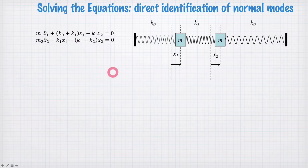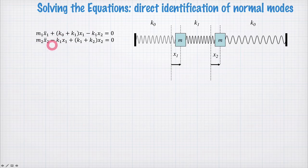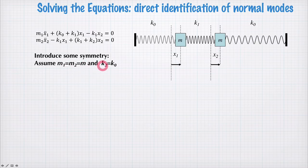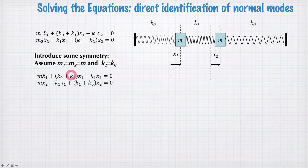Let's go ahead and solve these equations. We'll identify what are called the normal modes of oscillation. So these are our two equations of motion. We'll introduce some symmetry so that the masses are equal, and the spring constants at each end — k0 and what was previously k2 — are also equal. Now the situation is symmetric about the centre of the problem. Writing down these equations again, we've eliminated k2 and the masses are now equal.